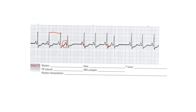For a premature beat it would be either a PAC or PJC. PACs come from the SA node and will produce a P wave - it may look a little different sometimes, but for the most part it is a P wave. These are premature, and therefore these are two PACs.